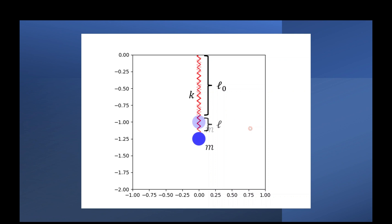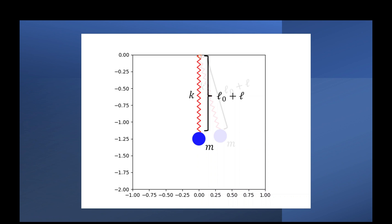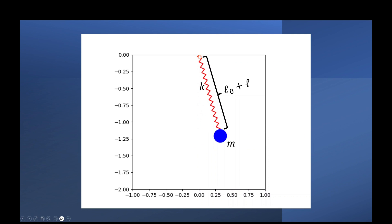When the spring stretches, it's going to increase or decrease by a distance of l. So the total length of the spring is now l0 plus l. Lastly, we can rotate about the origin by theta in radians.